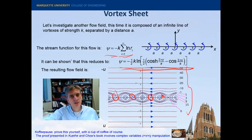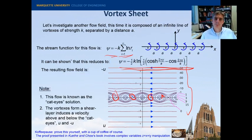So you can plot this yourself. And then also, as y goes to infinity, as we get far away from the sheet, the streamlines become almost parallel. Well, we'll see that they do become parallel far, far, far away from the sheet. All right, so this is known as the cat-eye solution.